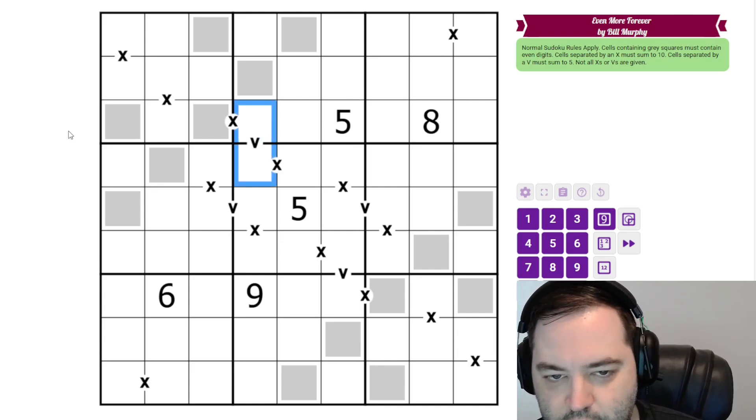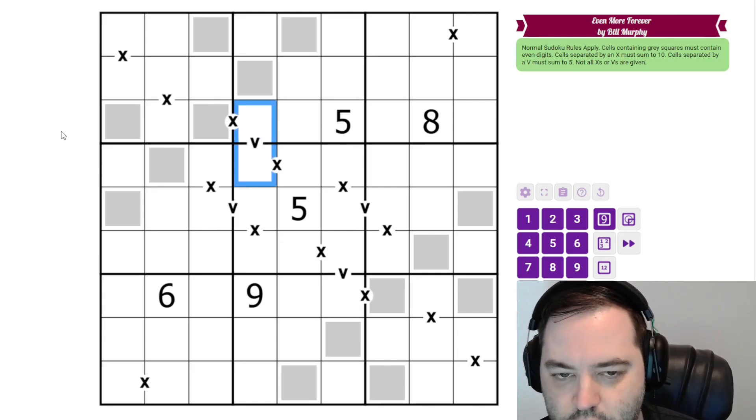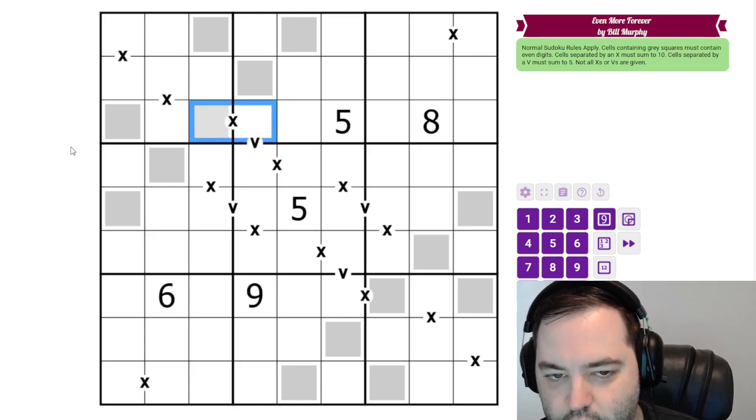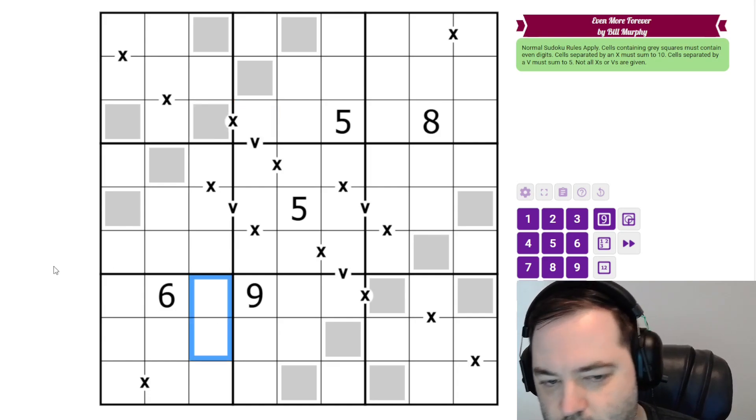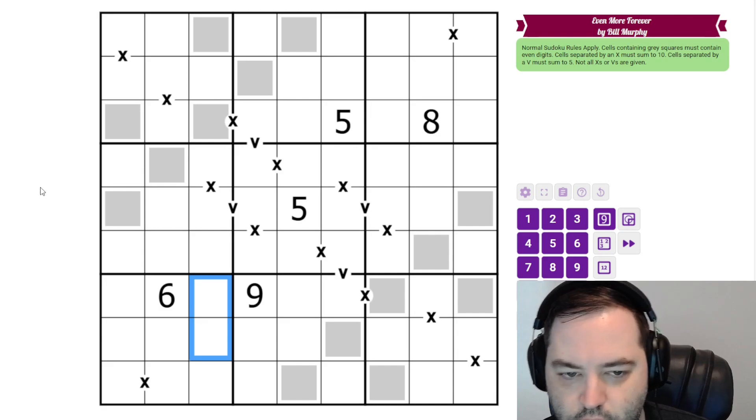And then we have some x's and v's. If there is a v between two cells, those digits sum to five. And if there's an x, those sum to ten. And there may be other pairs of digits. For example, these might sum to ten or five. Those are the rules.